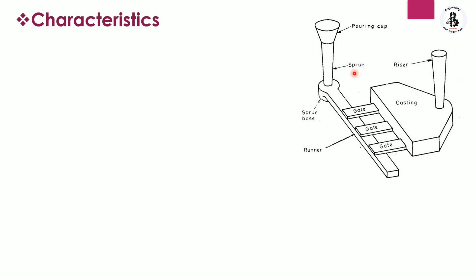The sprue is the vertical passage that provides for the passing of molten metal towards the cavity. At the end of the sprue there is a sprue base. The molten metal collects as it passes through the pouring cup and sprue into the sprue base.